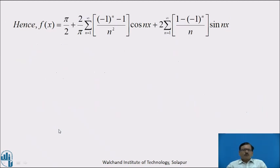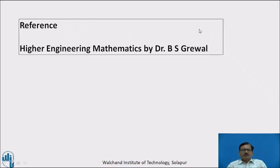Substituting the values of a naught, aₙ and bₙ in equation number 1, we get f(x) equal to pi by 2 plus 2 by π summation of n equal to 1 to infinity of (−1)ⁿ minus 1 by n square times cos(nx), plus 2 summation of n equal to 1 to infinity of 1 minus (−1)ⁿ by n times sin(nx). References: Higher Engineering Mathematics by Dr. B.S. Grewal. Thank you.